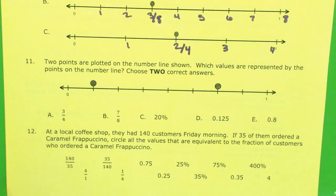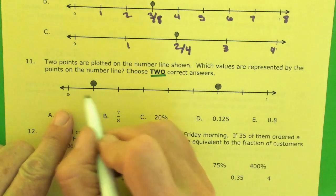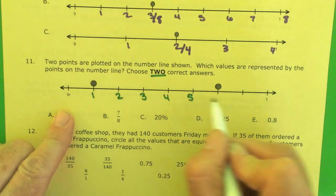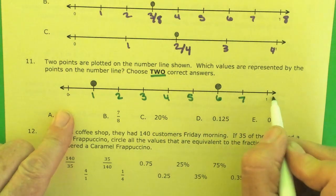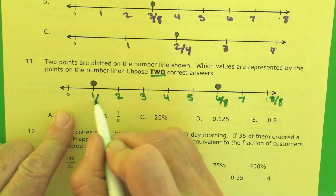Number 11. Two points are plotted on the number line shown. Which values are represented by the points on the number line? Choose 2 correct answers. Let me count the dots. There's 0. So you're 1, 2, 3, 4, 5, 6, 7. This is 8 out of 8. So you're 6 out of 8. And you're 1 out of 8.